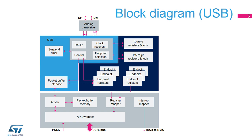The block diagram of the USB Full-Speed Device Controller shows the various building blocks inside, along with its analog transceiver, which manages the physical layer, shown above. The physical layer, or PHY, handles the analog signal levels, including specific level detections, as well as battery charger detection functions.